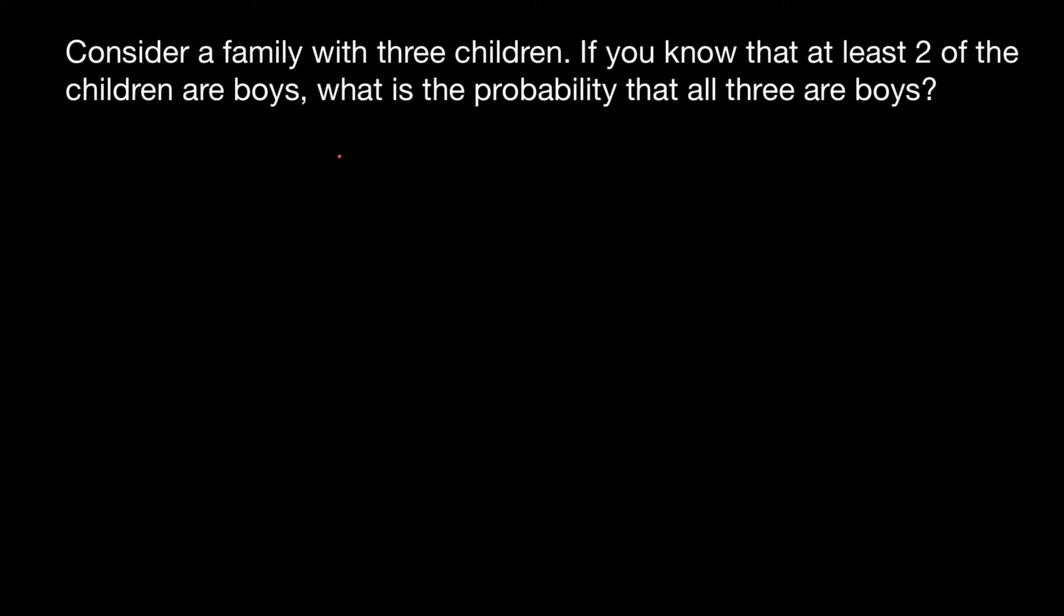First of all, let's find how many combinations we may have. We have the first child, second child, and third child of any sex, can be a boy or a girl. So two combinations are possible for the first child, two combinations possible for the second child, and two combinations possible for the third child.